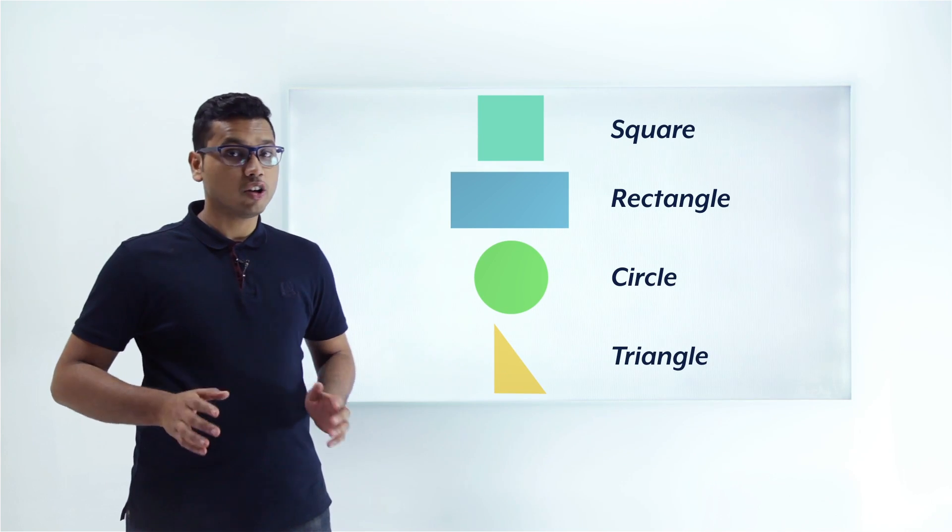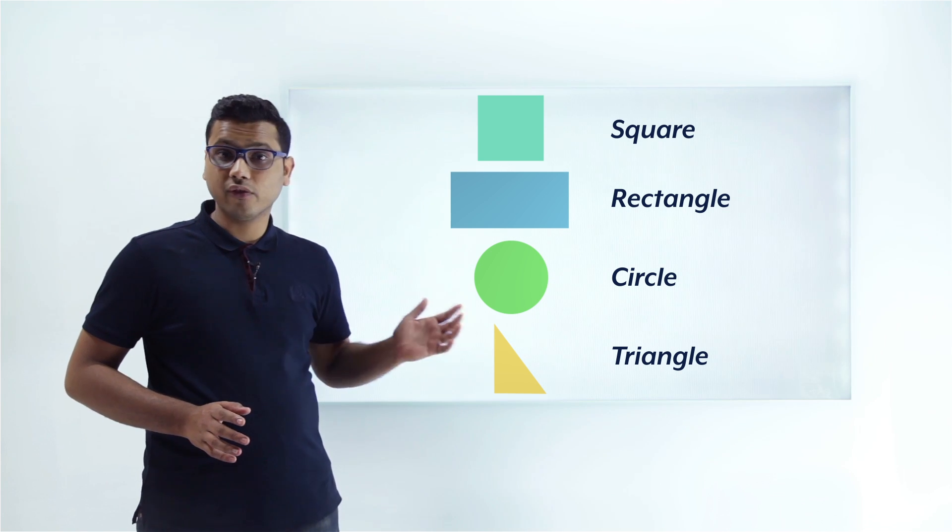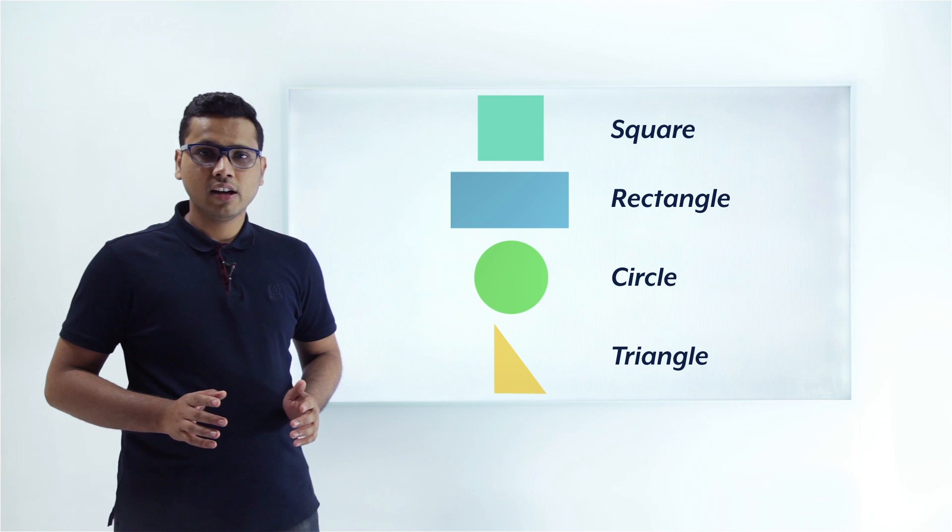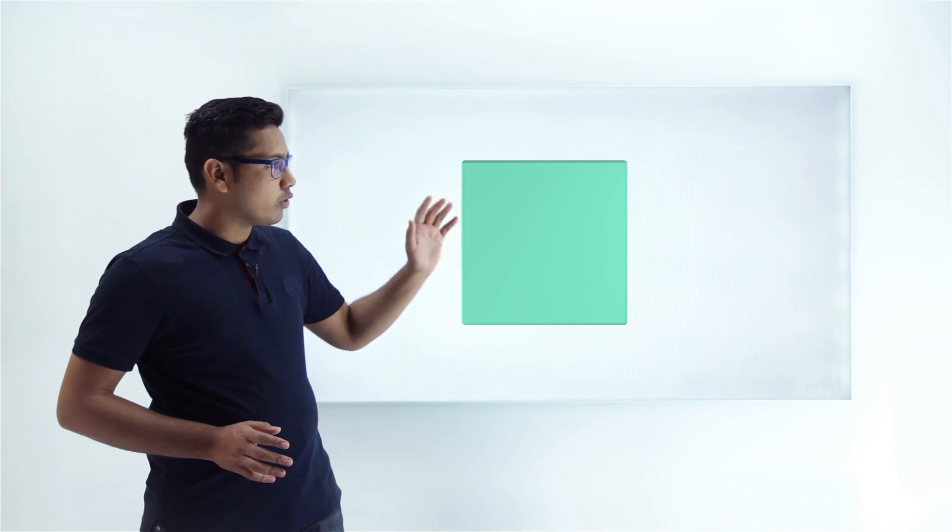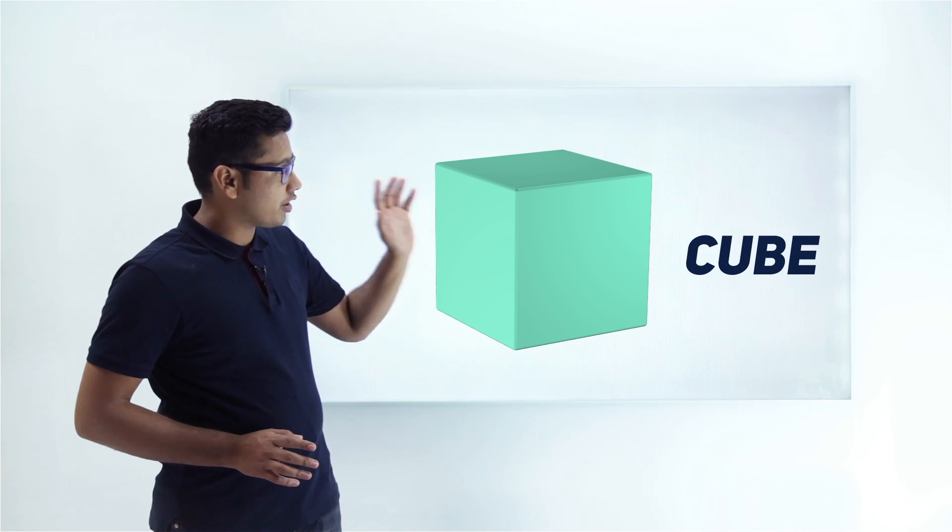Then later on we had also learned that if we give depth to these 2D figures, they get converted into 3D figures. Like if I take this square and give depth to this square and rotate it, you will find out that this square has converted into a cube.